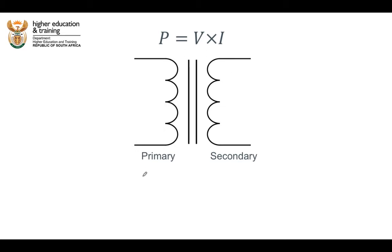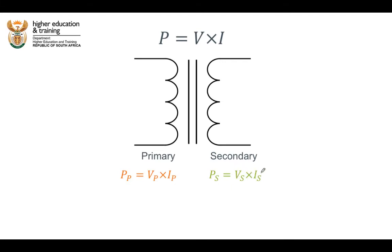Let's first look at the primary side of the transformer. The power in the primary circuit is equal to the voltage across the primary coil multiplied by the current through the primary coil. Similarly, the power in the secondary part of the transformer is equal to the voltage across the secondary coil multiplied by the current through the secondary coil.